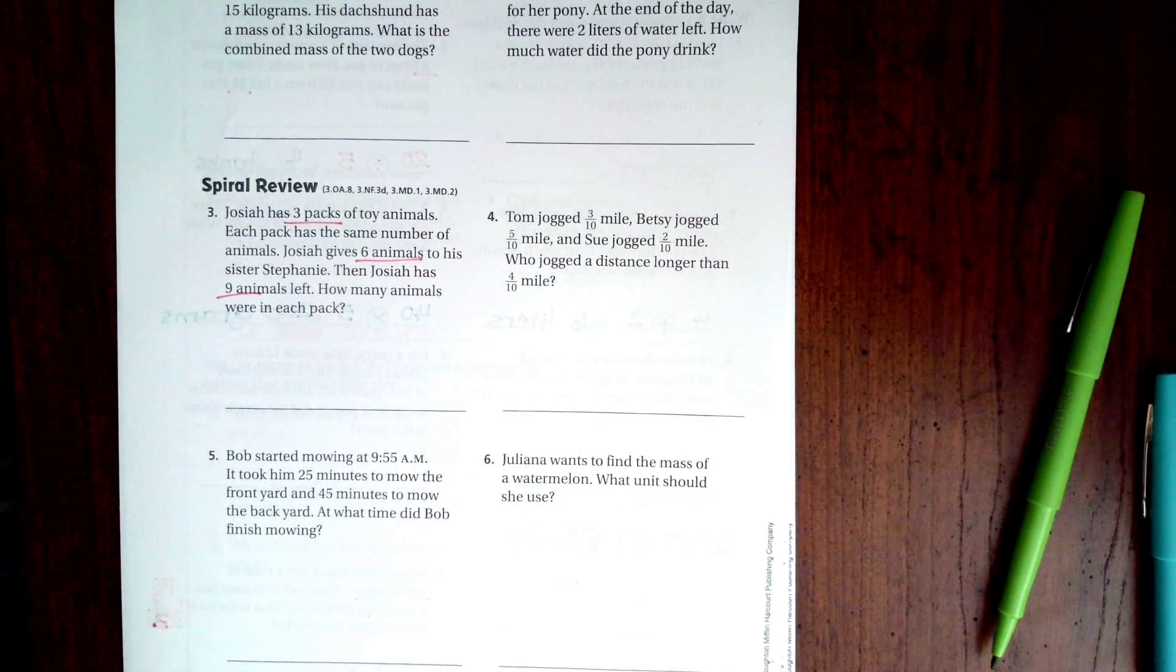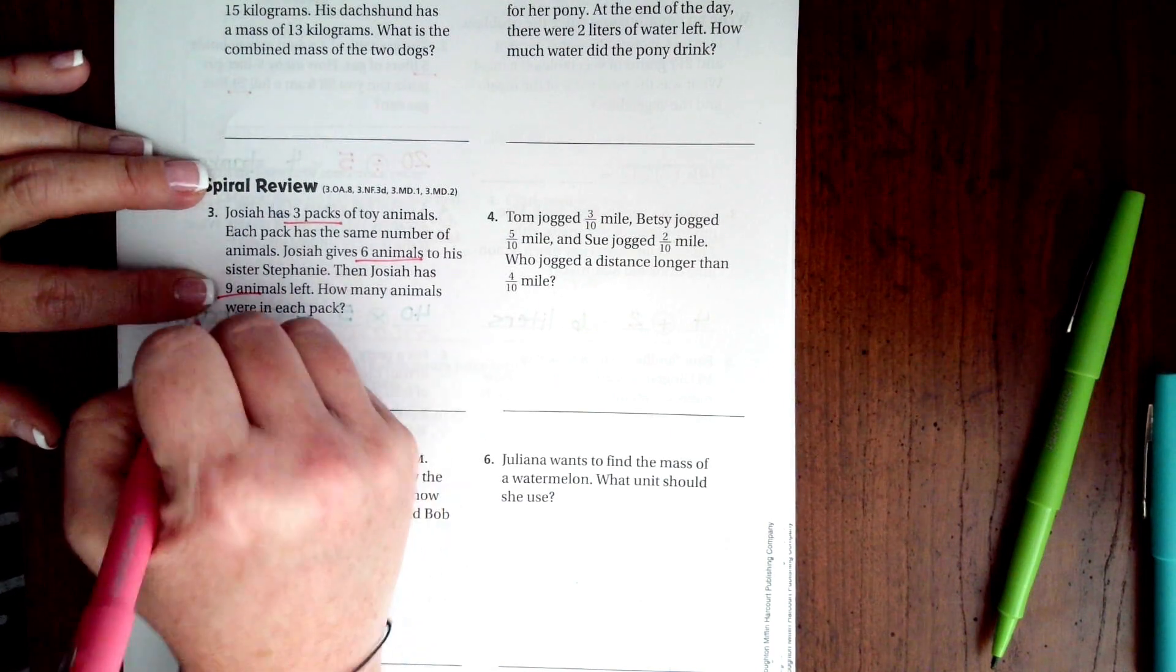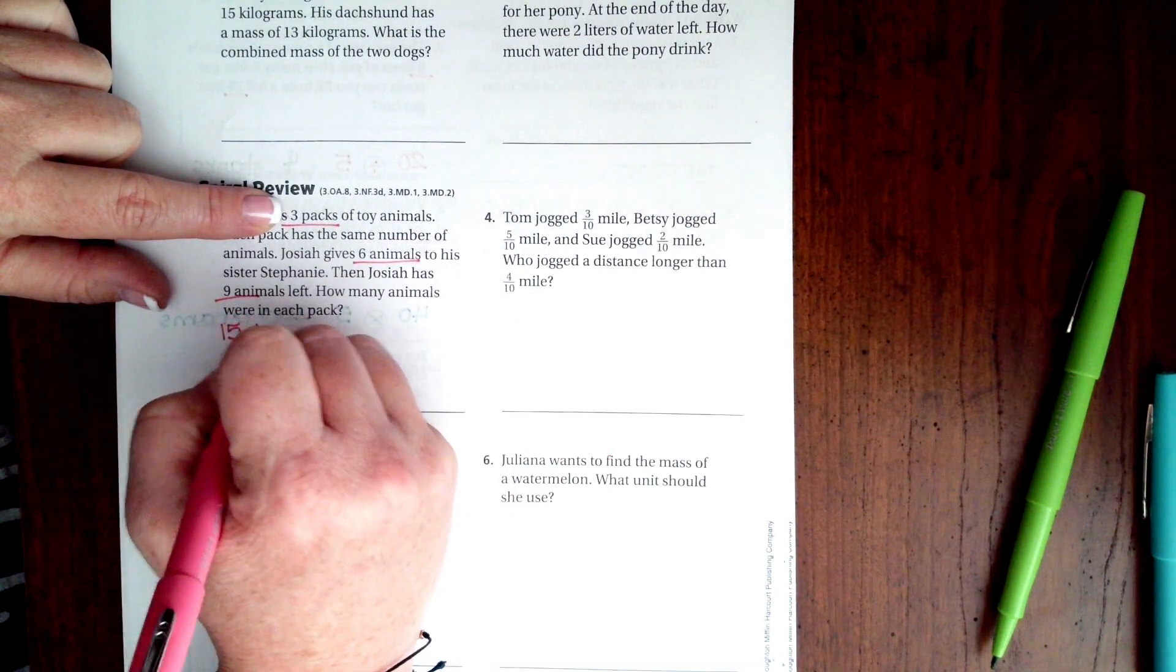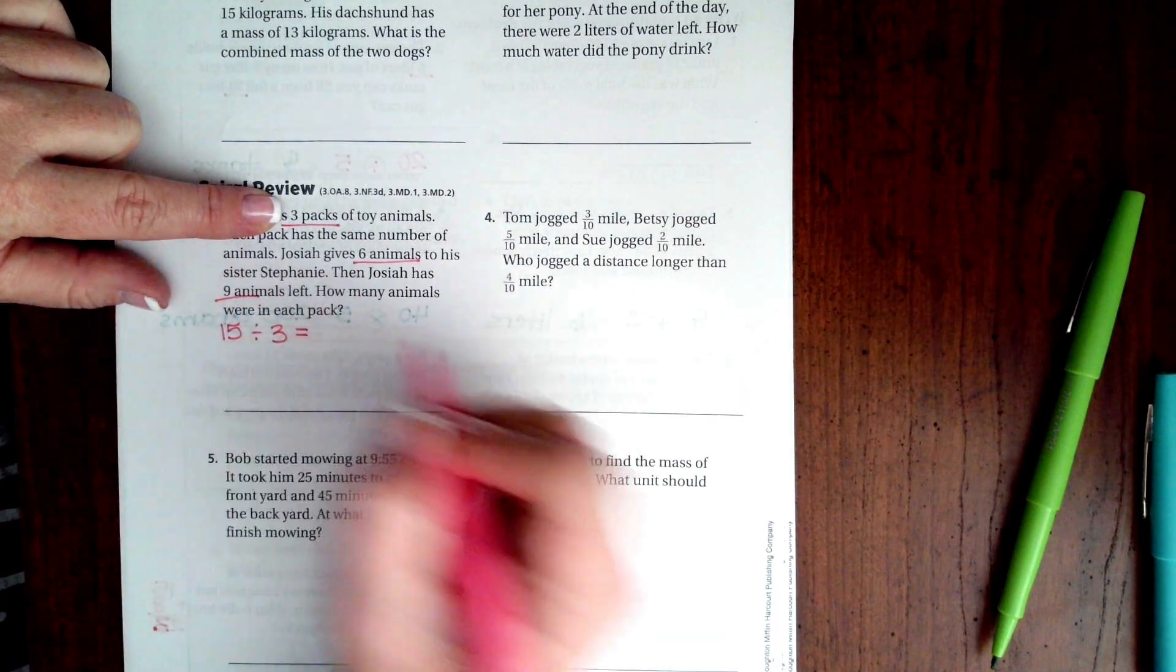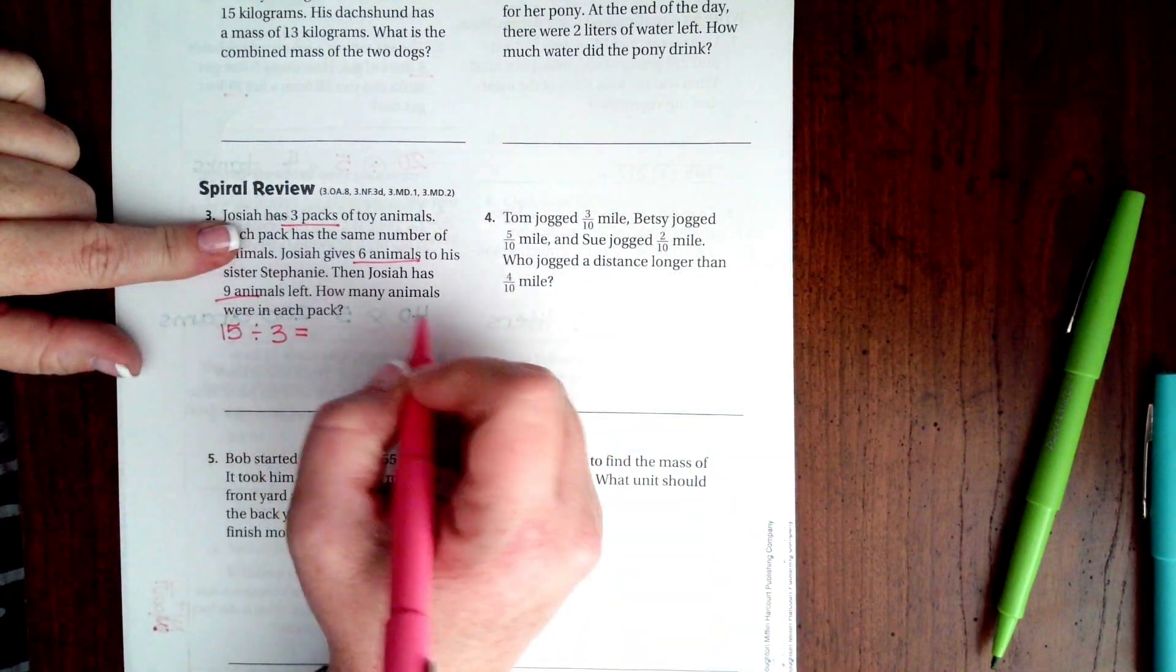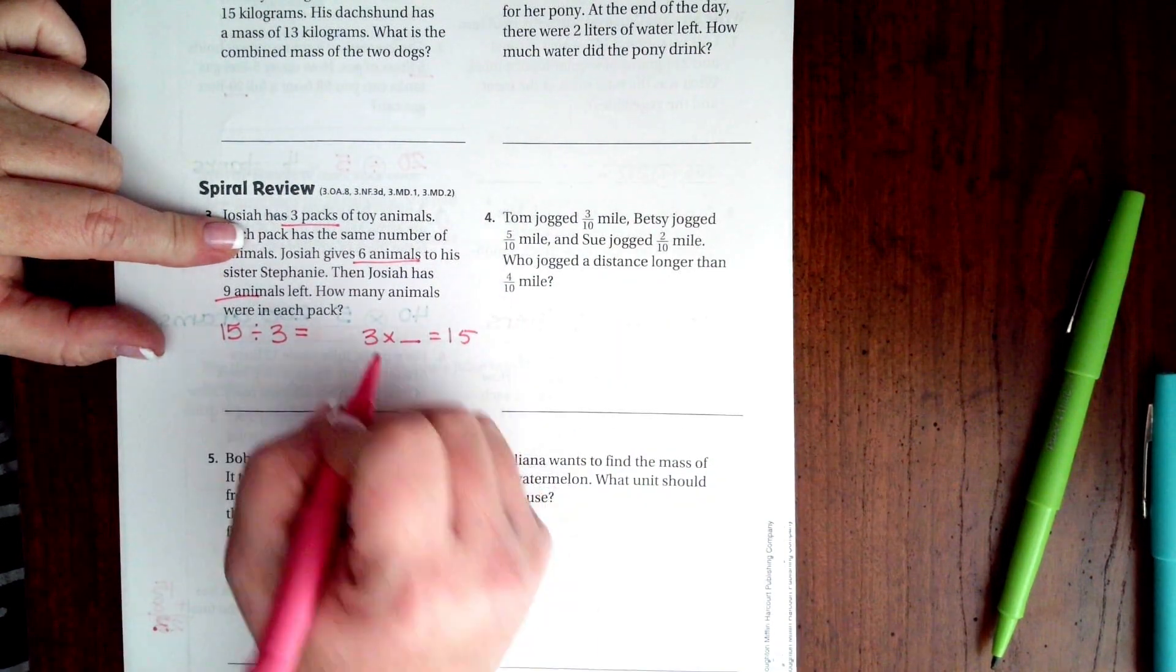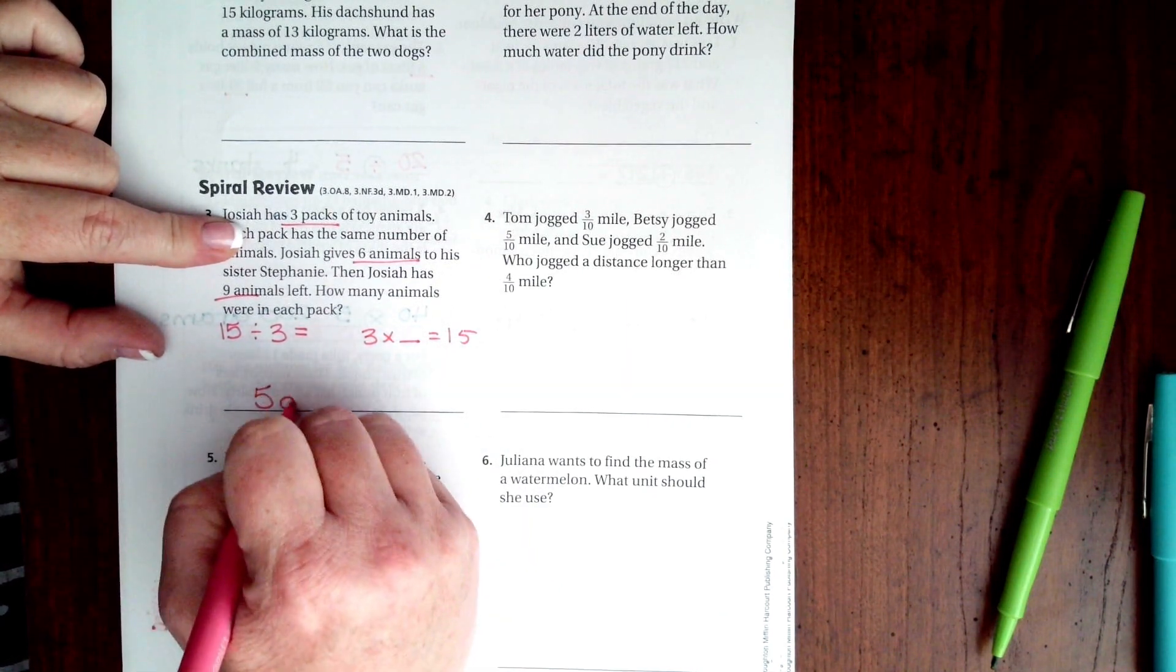How many animals were in each pack? First I have to know how many he had all together to start with. So 9 plus 6 is 15. Then there were 3 of those packs. I'm going to divide that by 3. So I can do 15 divided by 3 or I can do 3 times what is 15? And I know that 3 times 5 is 15. So 5 animals.